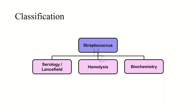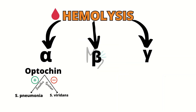Streptococcus is classified based on serology — also called Lancefield classification — as well as on the basis of hemolysis and biochemistry. Based on hemolysis, it is classified into alpha-hemolytic, beta-hemolytic, and gamma-hemolytic bacteria. Alpha-hemolytic bacteria cause partial hemolysis; beta-hemolytic bacteria cause complete hemolysis on blood agar; gamma-hemolytic bacteria cause zero hemolysis. Alpha-hemolytic bacteria are further classified by optochin sensitivity: if sensitive, it is Streptococcus pneumoniae; if resistant, it is Streptococcus viridans — and today's video is about Streptococcus viridans.